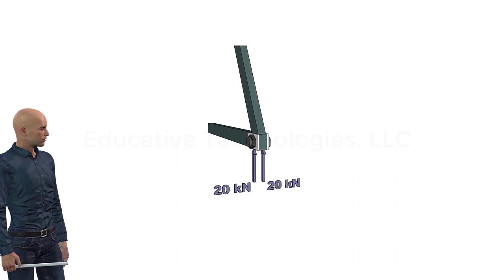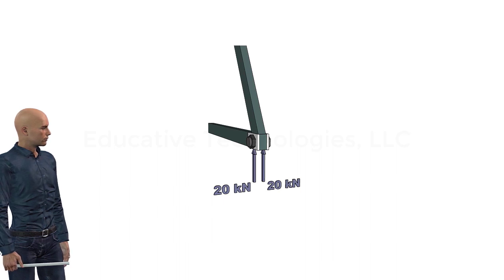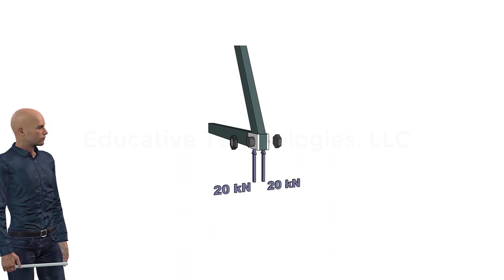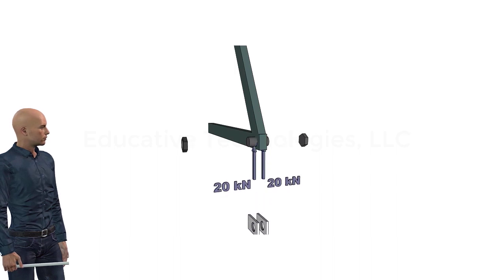Furthermore, the force interaction between the truss and the bracket takes place through the bolt. Therefore, the fastener is subjected to a force of 20 kilonewtons on each side of the truss where it touches each bracket plate.